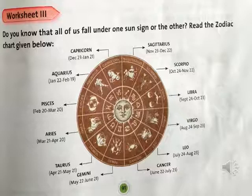Capricorn: December 23 to January 21. Dear students, the dates and months are mentioned here — whoever has their birthday falling in these days, they are having these zodiac signs.